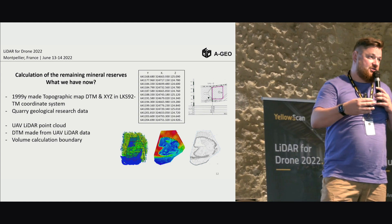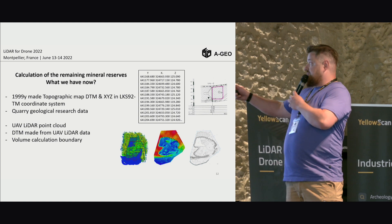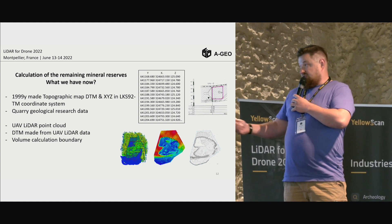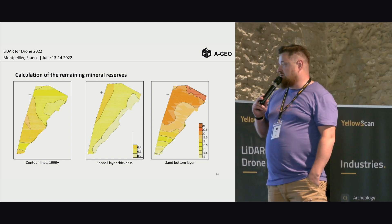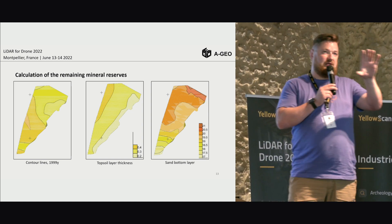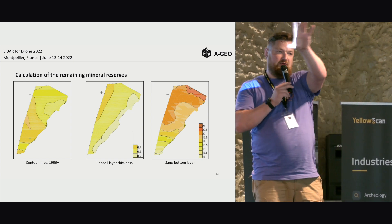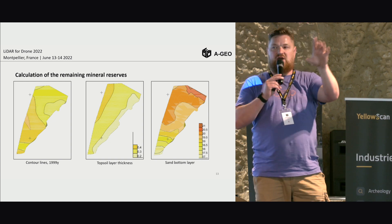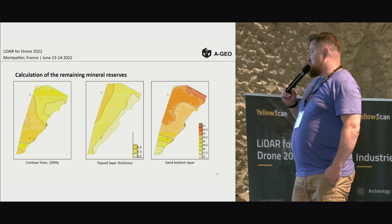Next is the calculation of the remaining mineral reserves. After all the data preparation, we are ready to calculate — we have the old data and the LiDAR data. The table shows the XYZ values from the 1999 data. We used the DTM to show the contour lines from 1999, and also the topsoil layer thickness. With LiDAR it's much easier to understand the soil — it's not straight lines from point to point, it's a real quarry. You need to use the LiDAR data to be as precise as possible. We also produced the sand bottom layer.